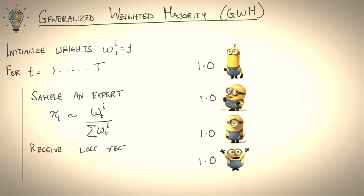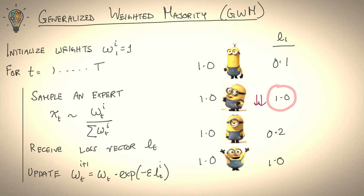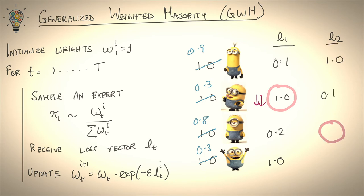Then you're going to receive a loss vector l_t from the adversary. So let's say you picked expert 2 and you saw a loss vector 0.1, 1.0, 0.2, 1.0. You're then going to update the weights w_t based on exponential of negative epsilon times loss — bump down experts that incur a high loss. And you keep repeating this step over and over again.